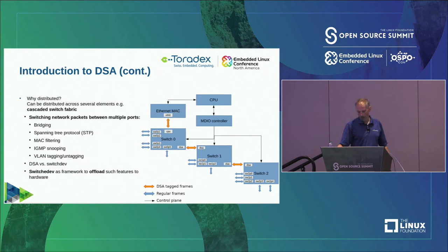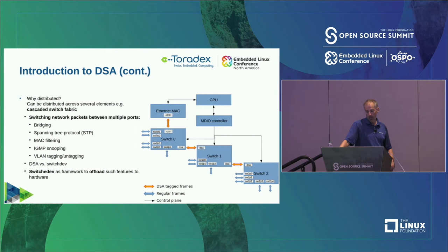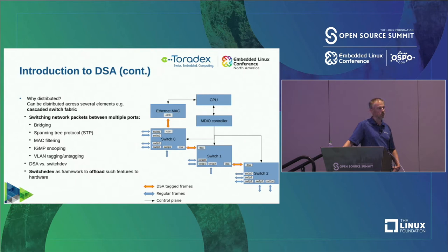If you chain switch chips, you have one CPU port going to the management processor or CPU, and then special DSA ports that are chained between switches. So when traffic from switch two needs to travel to the CPU, it needs to go through switch one and switch zero via those special DSA ports. Then it's about switching network packets between all those ports and providing higher-level services like bridging, spanning tree protocols, MAC filtering, IGMP snooping, and VLAN tagging and untagging — usually in hardware.